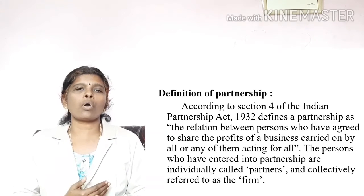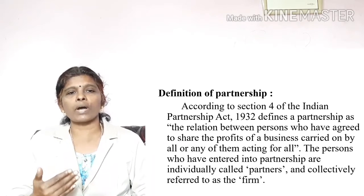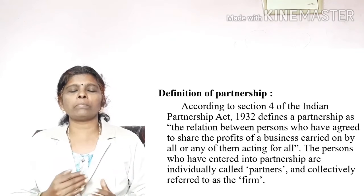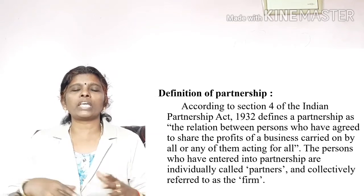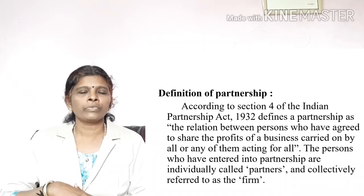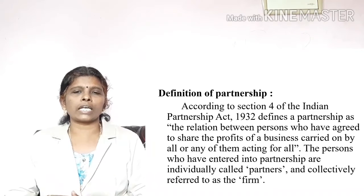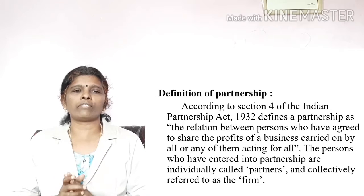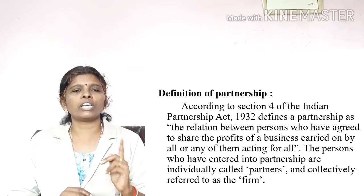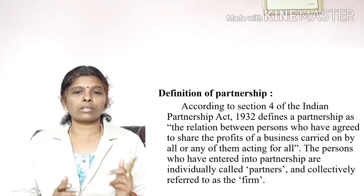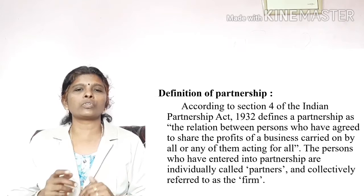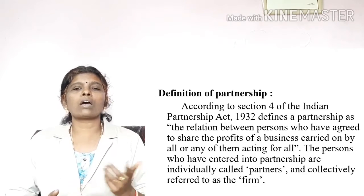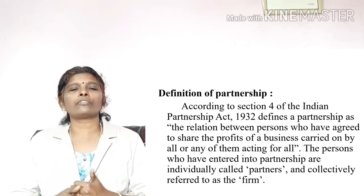The persons who have entered into a partnership business individually are called partners. For example, A, B, and C have started a business. Each one — A, B, C — is individually called a partner. The members in the partnership business are called partners, and they are collectively referred to as a firm.